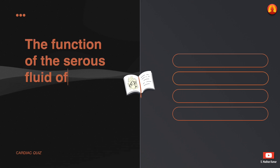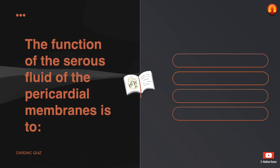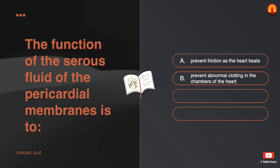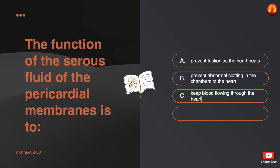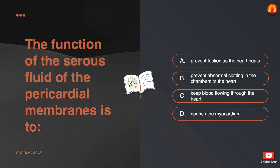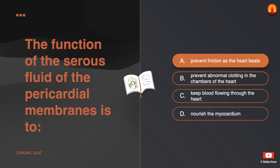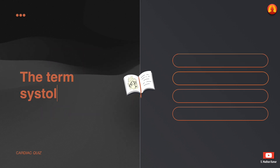The function of the serous fluid of the pericardial membranes is to: A. Prevent friction as the heart beats. B. Prevent abnormal clotting in the chambers of the heart. C. Keep blood flowing through the heart. D. Nourish the myocardium. The correct answer is: to prevent friction as the heart beats.